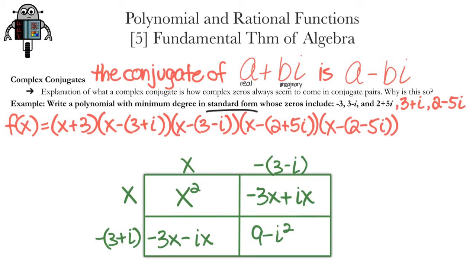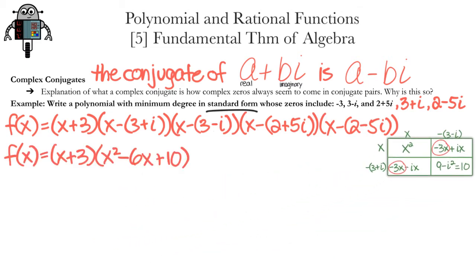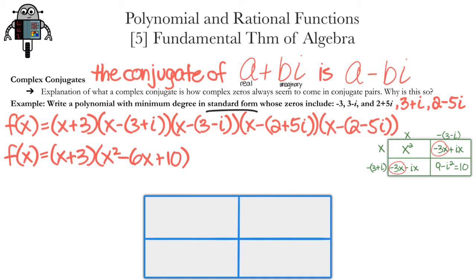The product of those two binomials, with the binomial inside, is the sum of all the terms inside the box. The outer and inner terms add up to negative 6x. And since i squared is negative 1, 9 minus negative 1 is 10. So, we can rewrite f(x) as (x + 3)(x² - 6x + 10) times the product of the next binomial. And we'll set up that product using a Punnett square or rectangle as well.